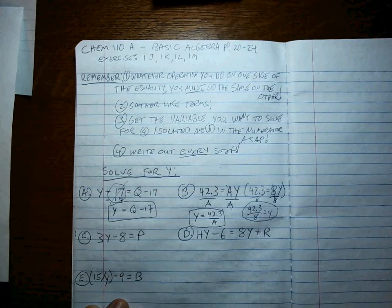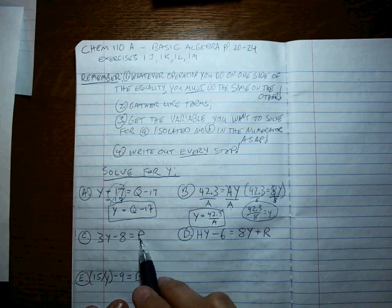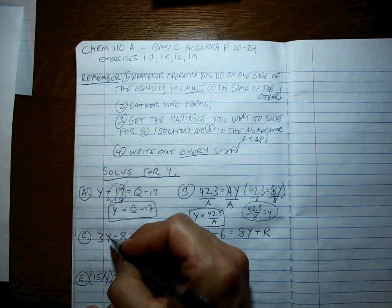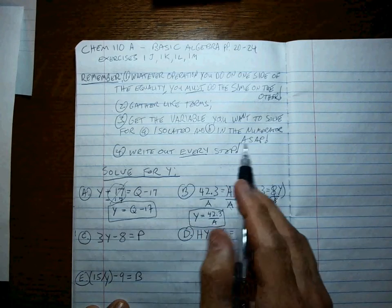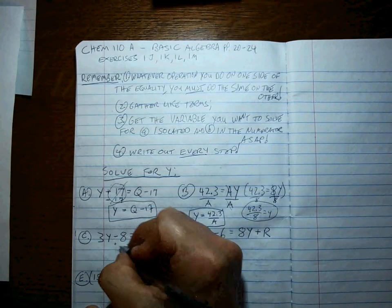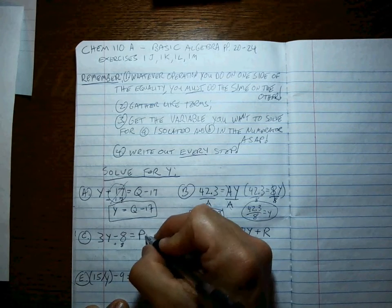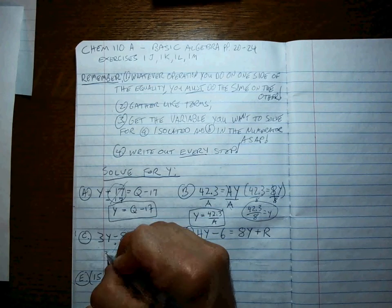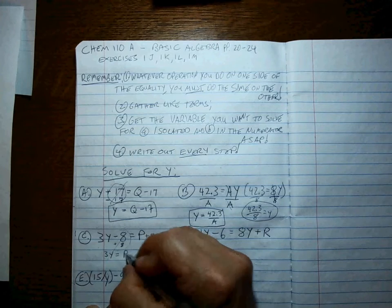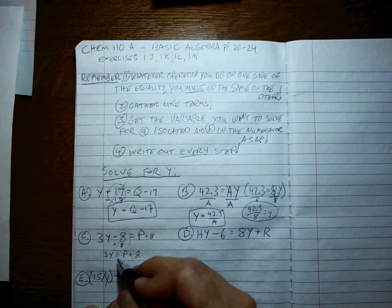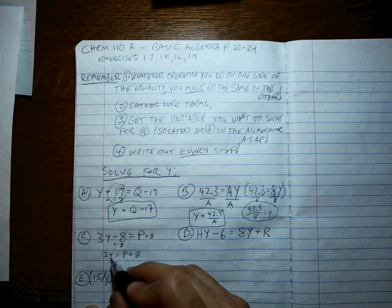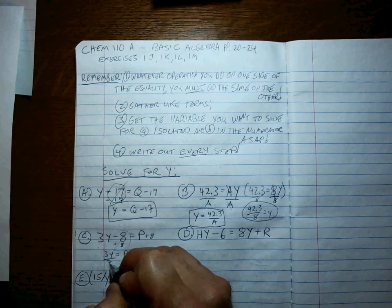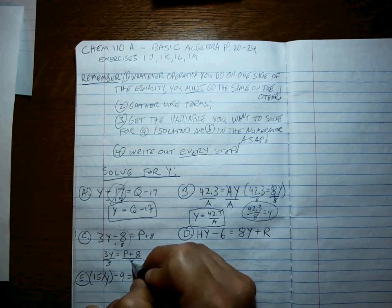All right, let's try another one. 3Y minus 8 is equal to P. Here we have the variable that we want mixed with numbers. So let's isolate the Y. It's already in the numerator, so we don't have to worry about that. So let's add 8 to both sides. And then write down the results. Negative 8 plus 8 is equal to 0. So you're left with 3Y is equal to P plus 8. Okay, that's nice. Now we want Y by itself. Well, if you remember, we had a value times Y. You divide both sides by 3. You divide everything by 3, not just the P.